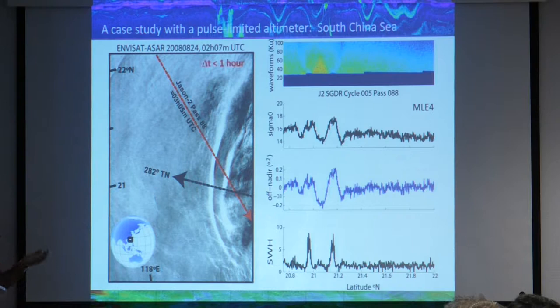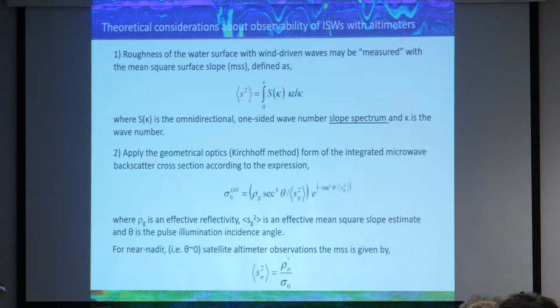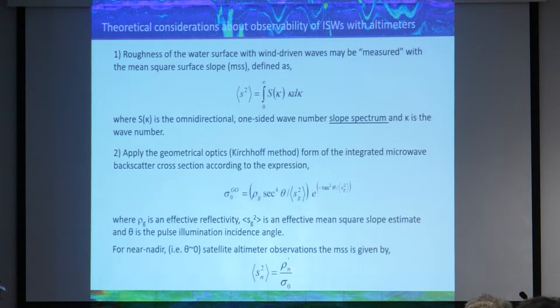The problem with these is that we need synergy to validate the observations, and synergy is only possible nowadays with Sentinel-3. Our method to look at internal waves with an altimeter consists of calculating the mean square slope, which is defined based on the slope spectrum at the given wave number. For altimeters, we use the Kirchhoff method, so-called geometric optics, to describe the signatures. For an ideal nadir-looking altimeter, the mean square slope is simply inversely proportional to sigma-naught, with a Fresnel coefficient adapted for the effect.